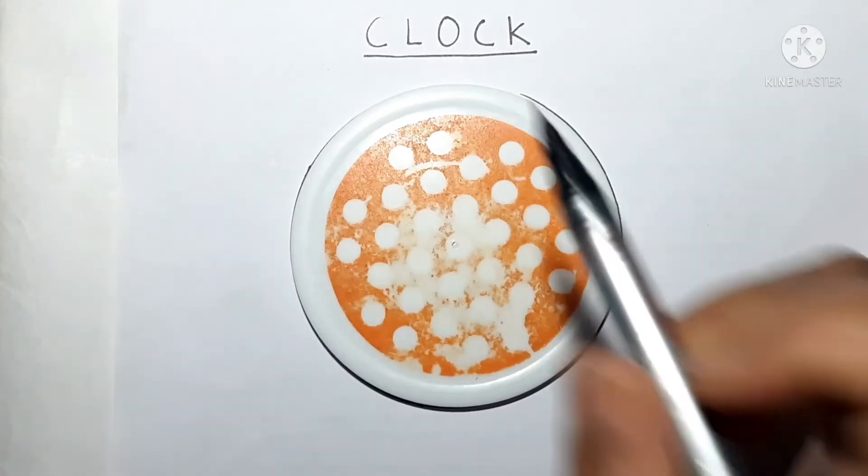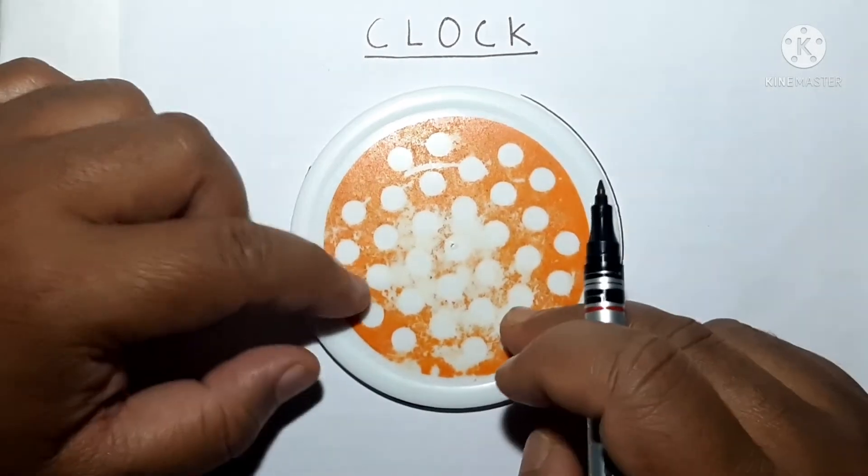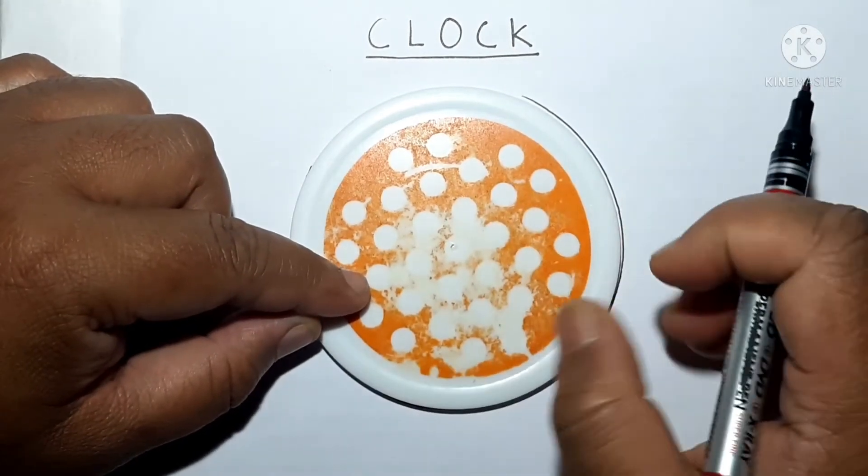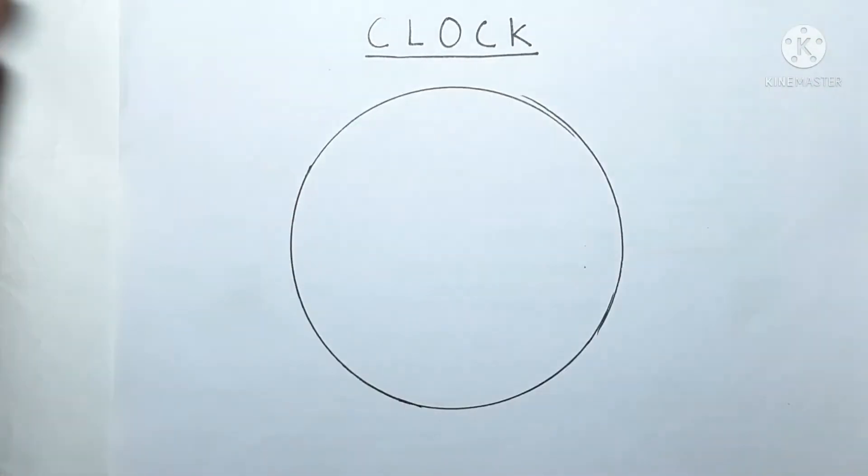Hello children, today I will teach you how to draw a clock on a paper. Take any circular object, I took this circular object, and then with the help of this object you draw a circle. As you can see, I drew one circle.